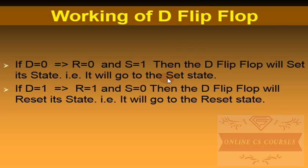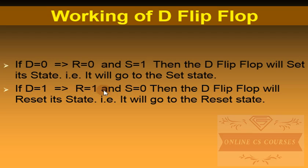If D is equal to 1, it means R (the reset state) is equal to 1. D represents the reset state and D complement represents the set state. So if D is equal to 1, it means reset state is 1 and set state is 0. The D flip flop will reset its state and go to the reset state, which is 0.